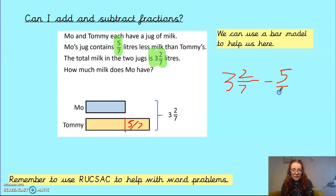Now, it's probably going to be easier for me if I convert this one into an improper fraction, a top-heavy fraction. So let's do that first. Right, I've got 3 times 7, which is 21, add in my 2, so that's 23 over 7.